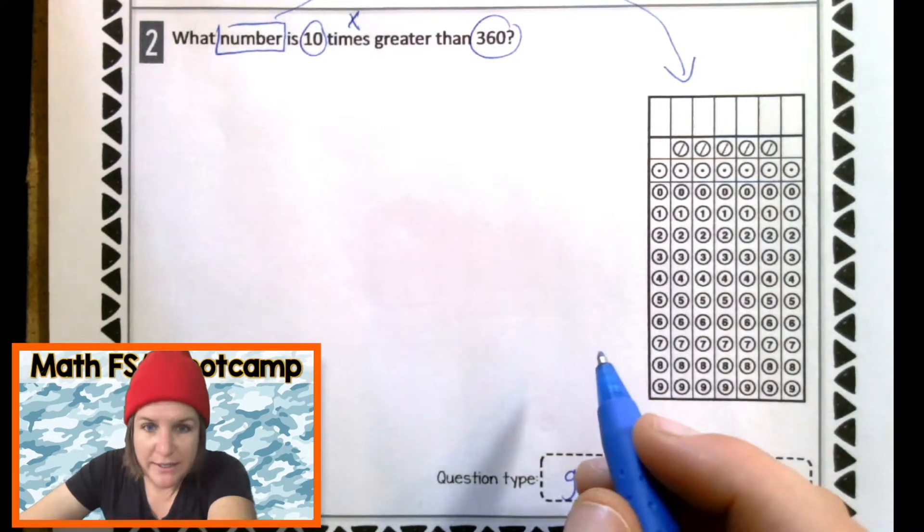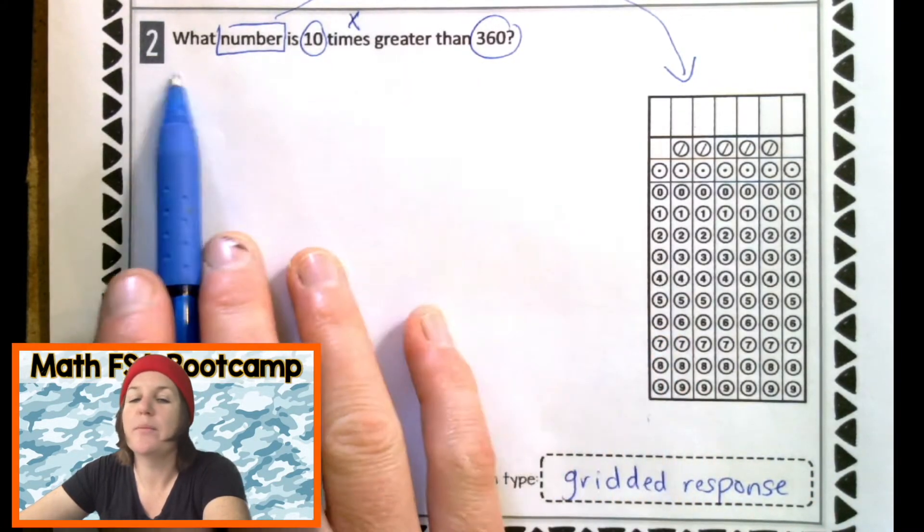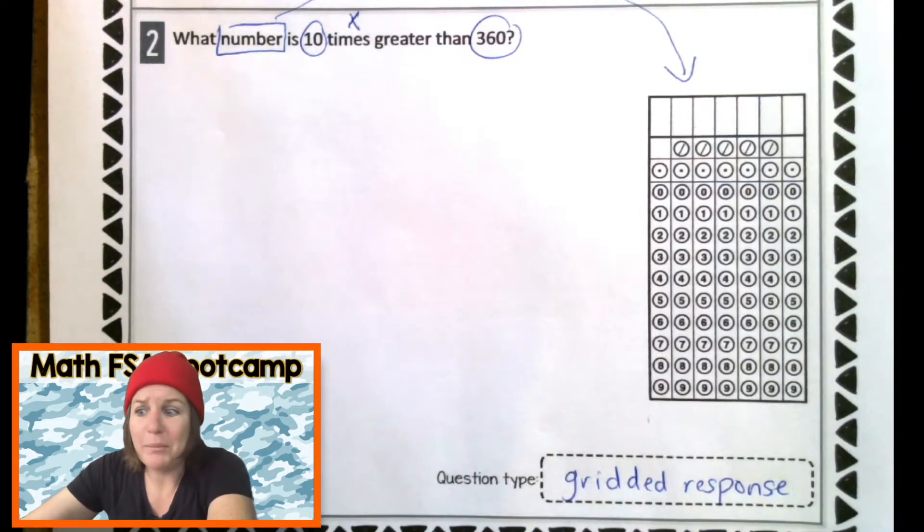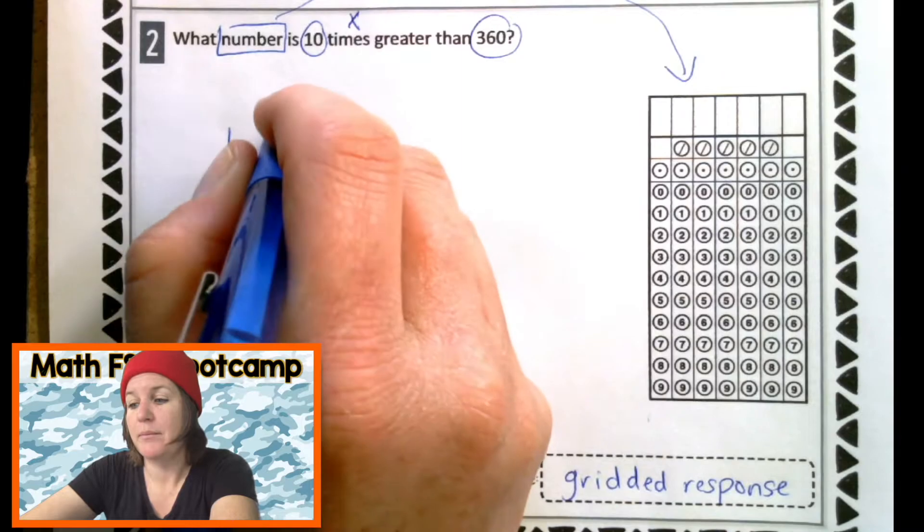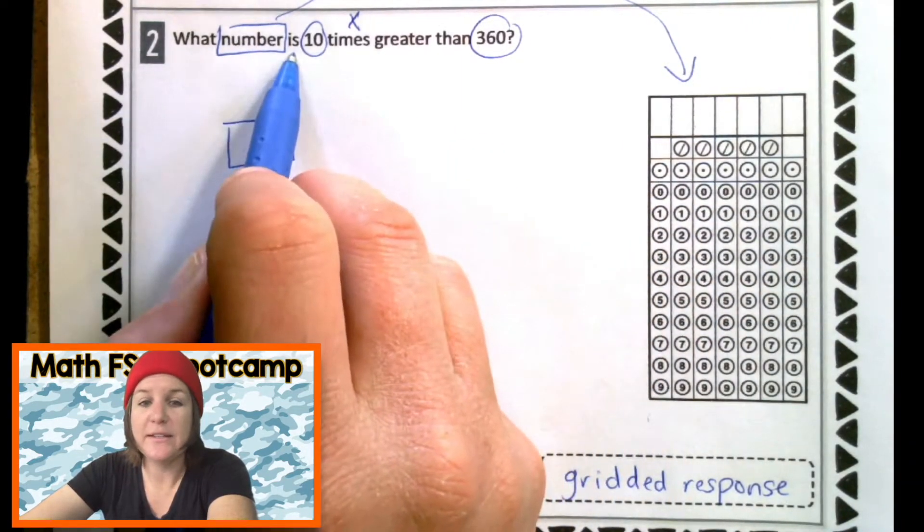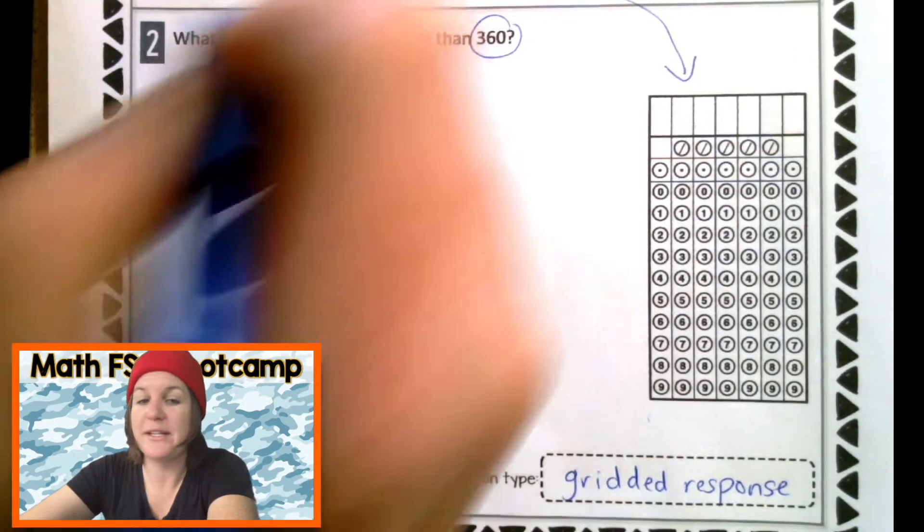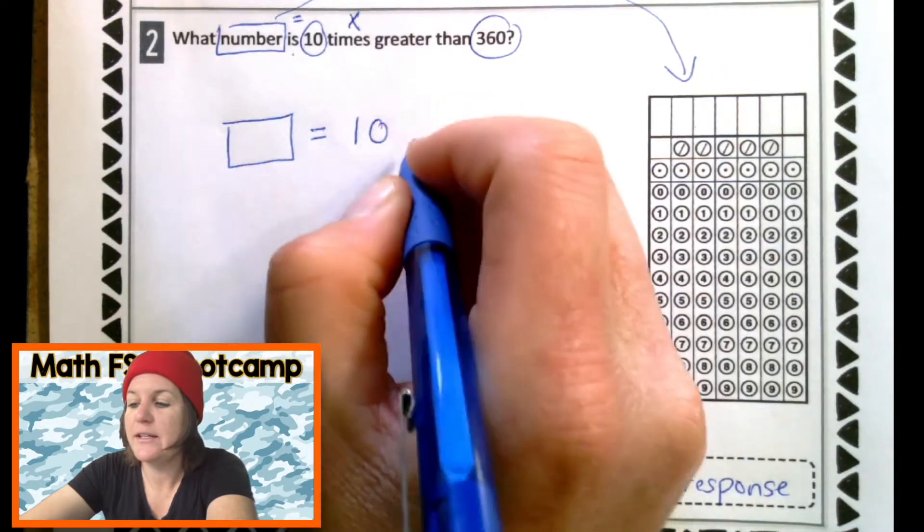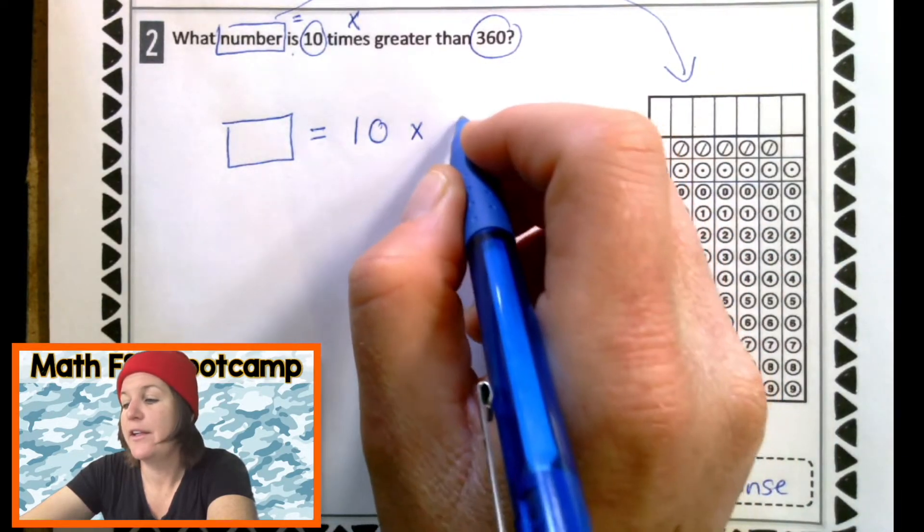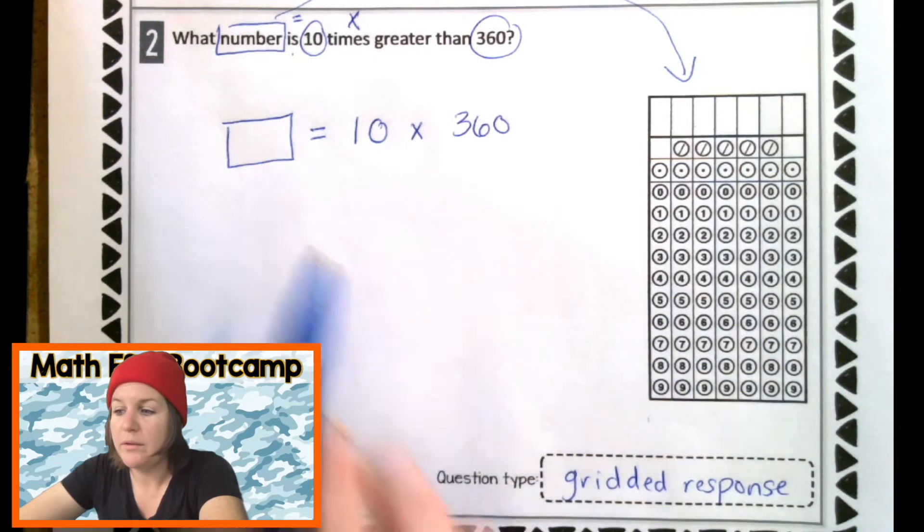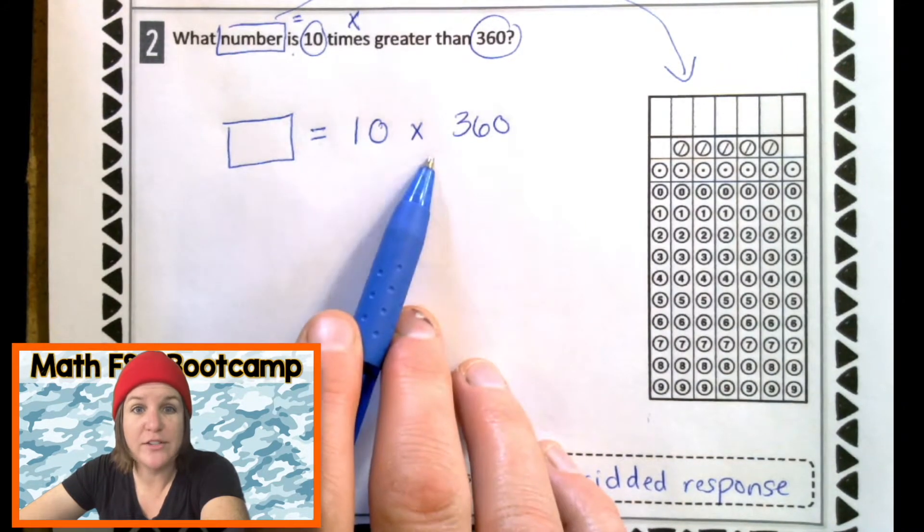What number is 10 times greater than 360? All right. For my brain to get this, I'm going to transform the words into numbers and symbols. So what number? I'm going to make a box because I don't know. It's what number is equals, because is means equals. What number is 10 times greater than 360? Well, to figure out this number, let's go ahead and solve this equation.